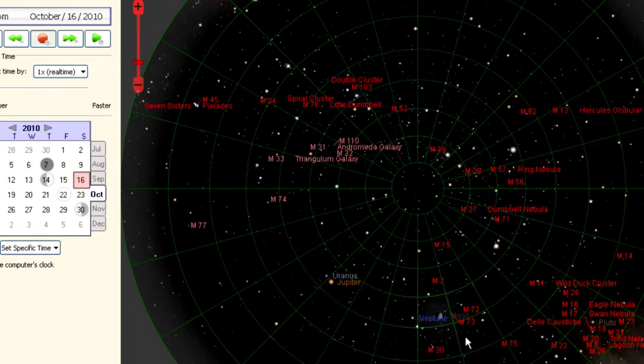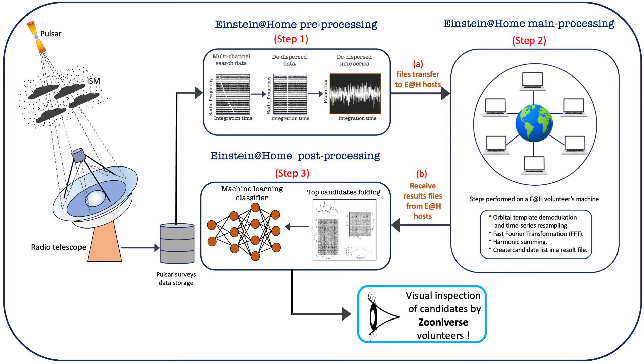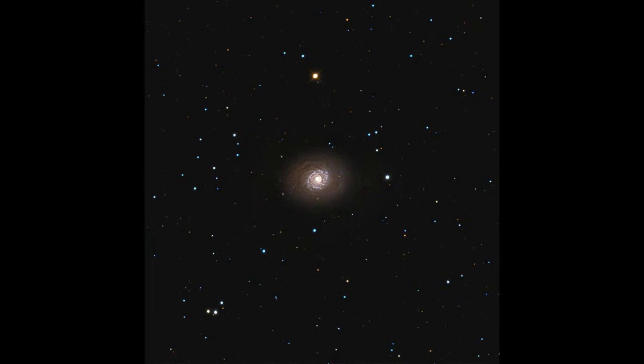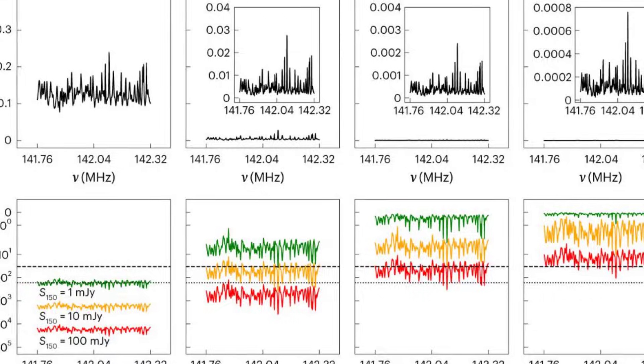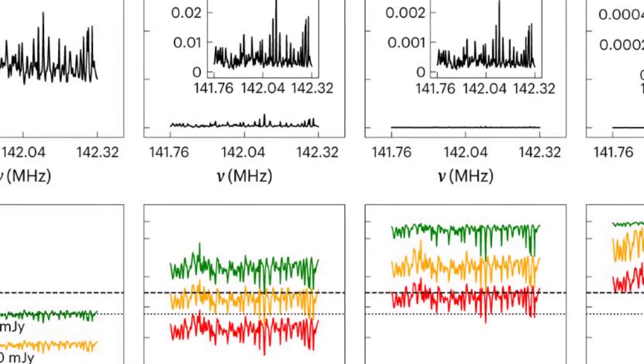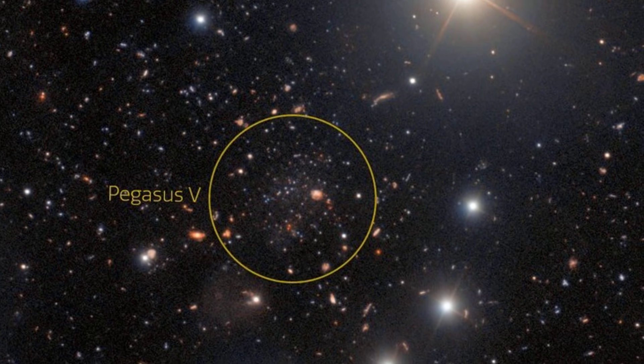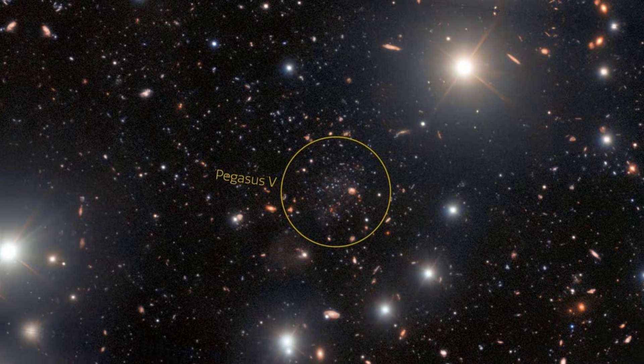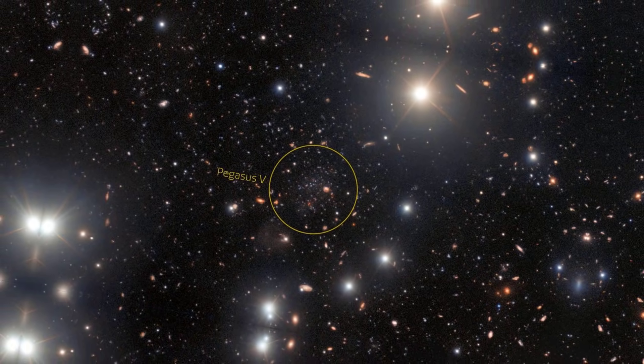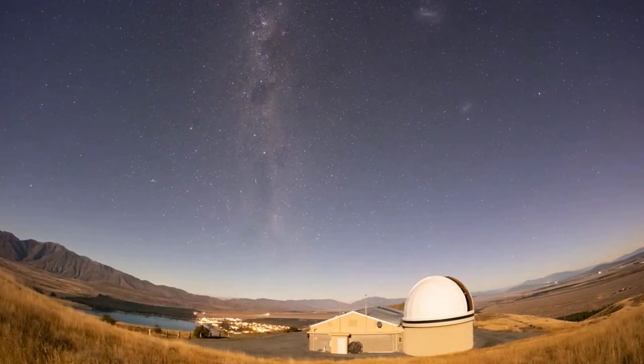The coordinates were precise, the line was real, and the object was new. Every step in the data chain pointed to the same conclusion: something massive and invisible was sitting in the void, broadcasting its presence only through a whisper of hydrogen at a frequency the universe rarely uses for anything else. With the signal confirmed in the radio, the next step was clear. To rule out a faint hidden galaxy or background source, the team needed optical confirmation.